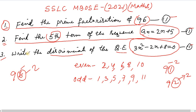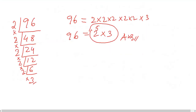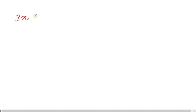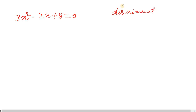Now the next question: Write the discriminant of the quadratic equation 3x squared minus 2x plus 8 equals 0. We need to find the discriminant of this quadratic equation.